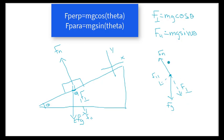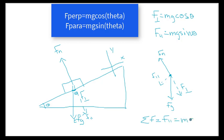If I want to know the normal force acting on the box — the force supporting the box — it is mg cosine theta. The box pushes against the incline with mg cosine theta. The force propelling it down the incline, causing it to accelerate, is mg sine theta. So the net force that causes it to accelerate down the incline is F-parallel, which equals mg sine theta.